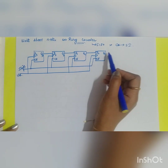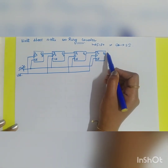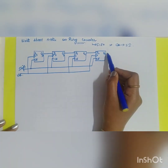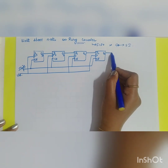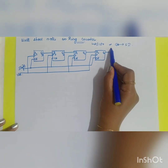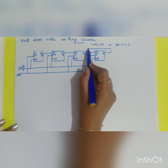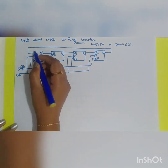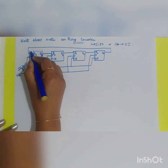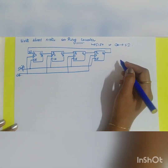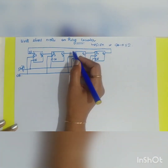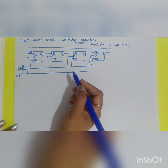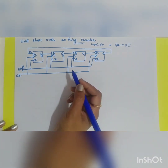The output of the previous flip-flop is fed as input to the next one. Now the only difference here is that the output Q0 is connected back to the serial input. This feedback connection is what makes it a ring counter. This is the structure of your ring counter.